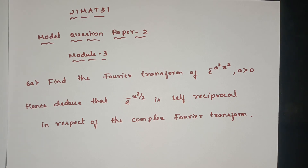In this question, note the 21 by 31 model question paper, model 3 question. Find the Fourier transform of e power minus a square x square, where a is greater than 0. Hence deduce that e power minus x square by 2 is self-reciprocal with respect to the complex Fourier transform.